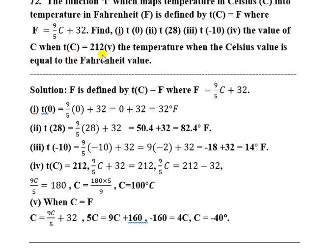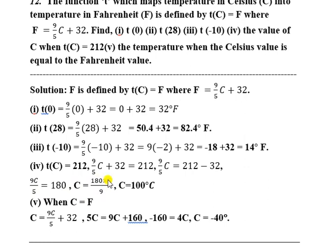Next: find the value of C when T of C equals 212. T of C equals 212. Solving: C equals 212, and working through the equation, 20 into 5 is 100 degrees. So T of C equal to 212 gives C equal to 100 degrees Celsius.